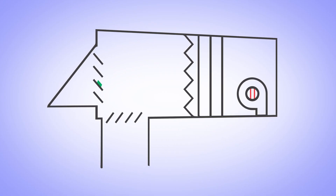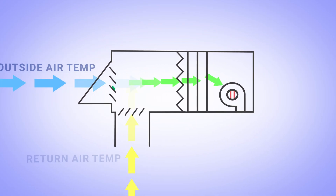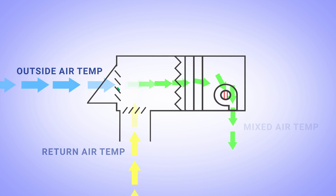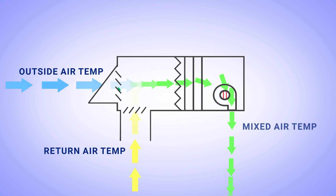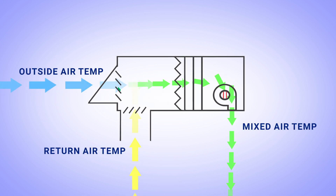During learned mode, the damper is positioned at several known points. At each point, the airflow, outside return, and mixed air temperature readings are allowed to stabilize before being sampled and averaged. The learned mode sequence requires a minimum delta T between outside and return air to ensure best accuracy. Table data may also be manually input if the desired delta T isn't available or if air balancer data is preferred.